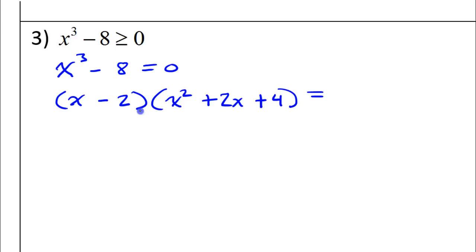Now, to find the actual zeros of the function, I need to set each of these equal to zero and solve. If I set x minus two equal to zero, and if I set x squared plus two x plus four equal to zero, then I would get the zeros. I'm setting this equal to zero, I'm going to get x equals two. So that's a critical value.